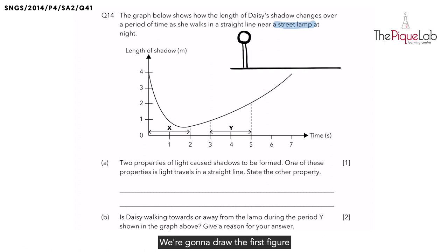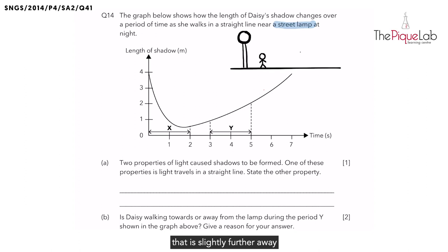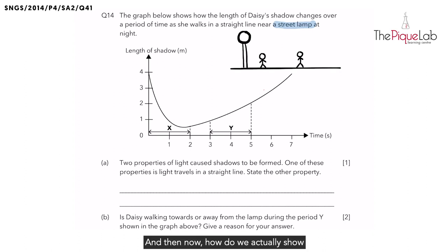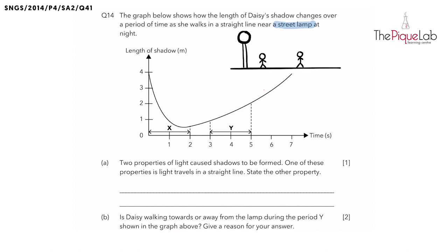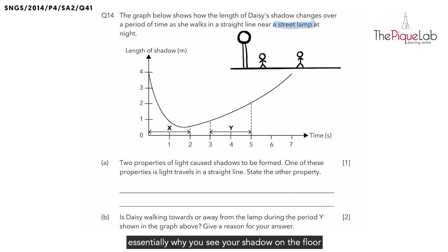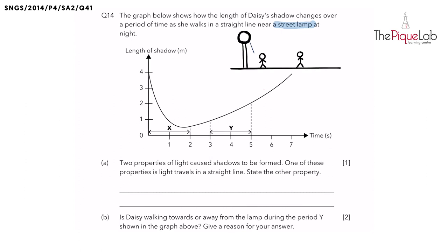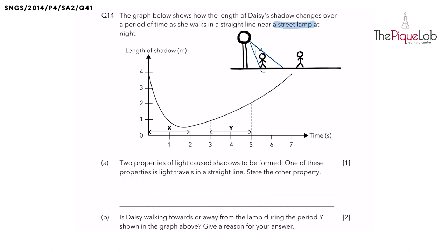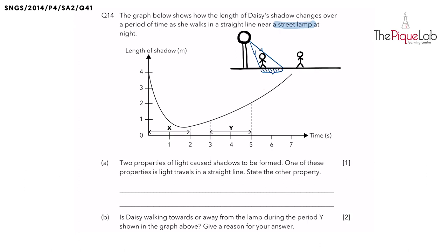After that we want to draw two figures. We're going to draw the first figure that is near the lamp post, and then another figure that is slightly further away from the street lamp. When you're standing near the street lamp, you see your shadow on the floor because light from the street lamp is being blocked by your own body. The portion between the two light rays is actually the length of the person's shadow when they're standing nearer to the lamp.